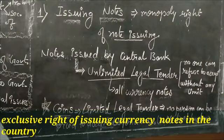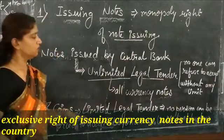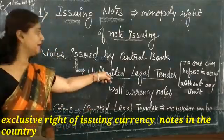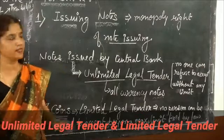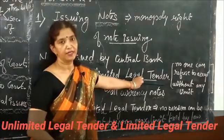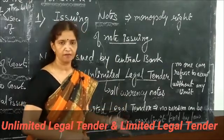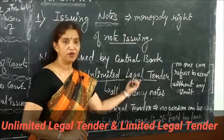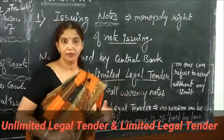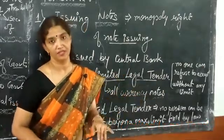Notes issued by the central bank are an unlimited legal tender. This raises the question: what is unlimited legal tender and what is limited legal tender? Legal tender means the currency — which includes coins or banknotes — that must be accepted if offered in payment of a debt.